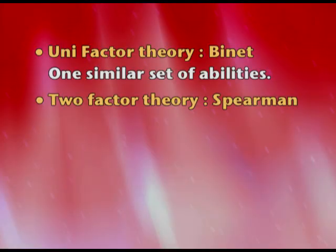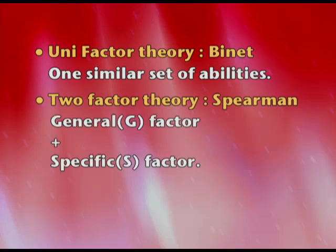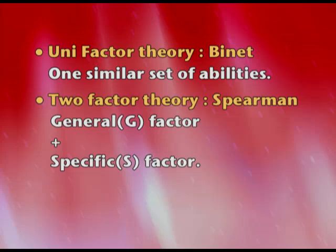The second theory, which was a modification of Binet's theory, was given by Charles Spearman. This is a two-factor theory. Binet talked about only the G factor, which is a general factor. The other is a specific factor — for instance, musical ability is a special ability required for a particular kind of task. Whereas speaking or writing involves a general ability. So the G factor covers all kinds of tasks, while specific ability talks about a particular field in which the person is exceptionally good.